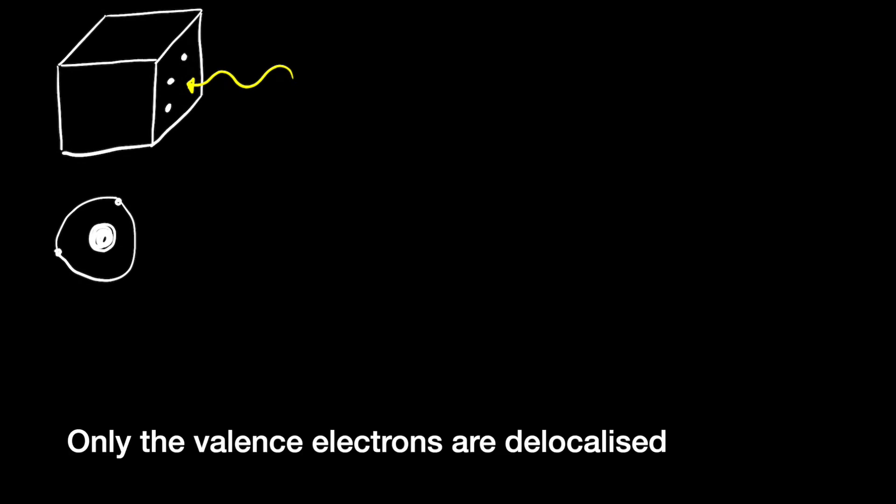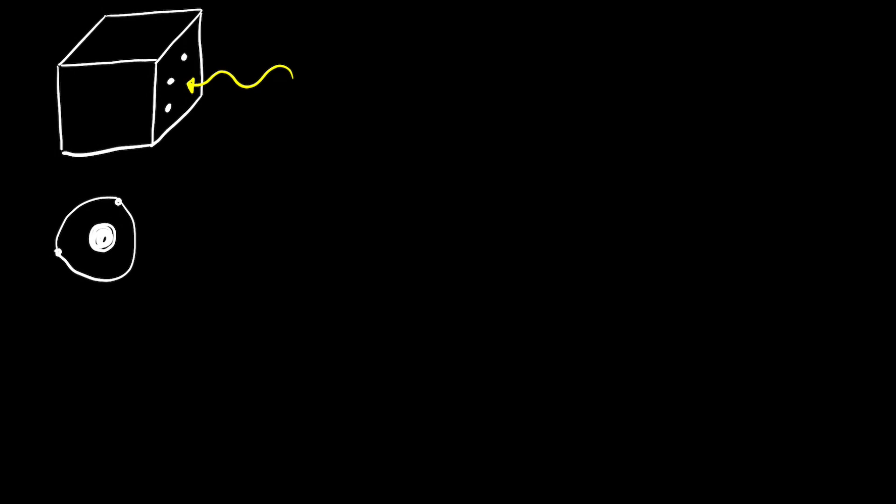Say we have a metal. The photoelectric effect is that if we shine some light on the surface of this metal, then the electrons, which are delocalised from the atomic nucleus — because in a metal these electrons are not bound to the nucleus, they're actually free to move, which is why metals can conduct electricity — these delocalised electrons can be liberated from the metal surface by incident light.